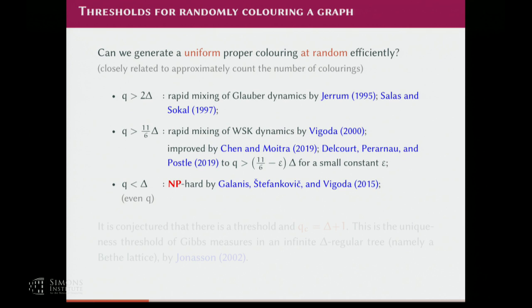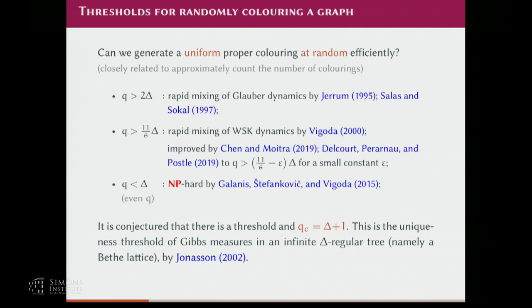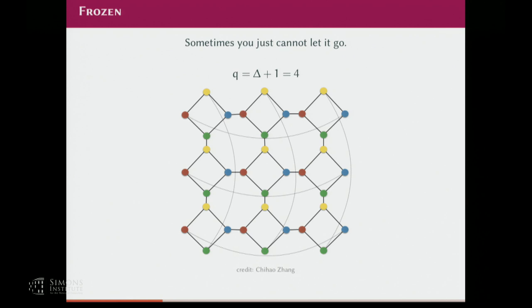So the question is: where is the threshold? The conjecture is that the threshold is delta+1, which is also the threshold of uniqueness of Gibbs measures on an infinite delta-regular tree. Basically the conjecture is that whenever it behaves nicely on an infinite regular tree, we should have an algorithm on any delta-bounded-degree graph. What happens at Q equals delta+1 — for example degree 3 with 4 colors — is you can have frozen configurations where if you remove the color of one vertex and try to recolor it, there's only one possible choice. So Glauber dynamics will freeze. This is conjectured to be the threshold, but the Markov chain is not the only method.